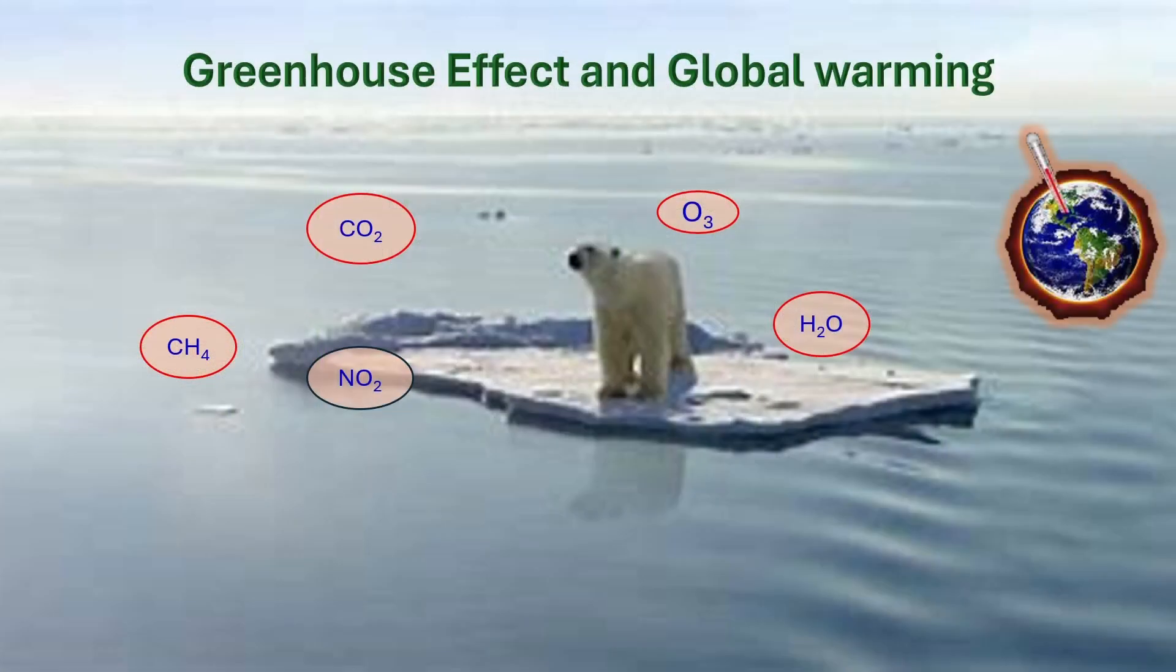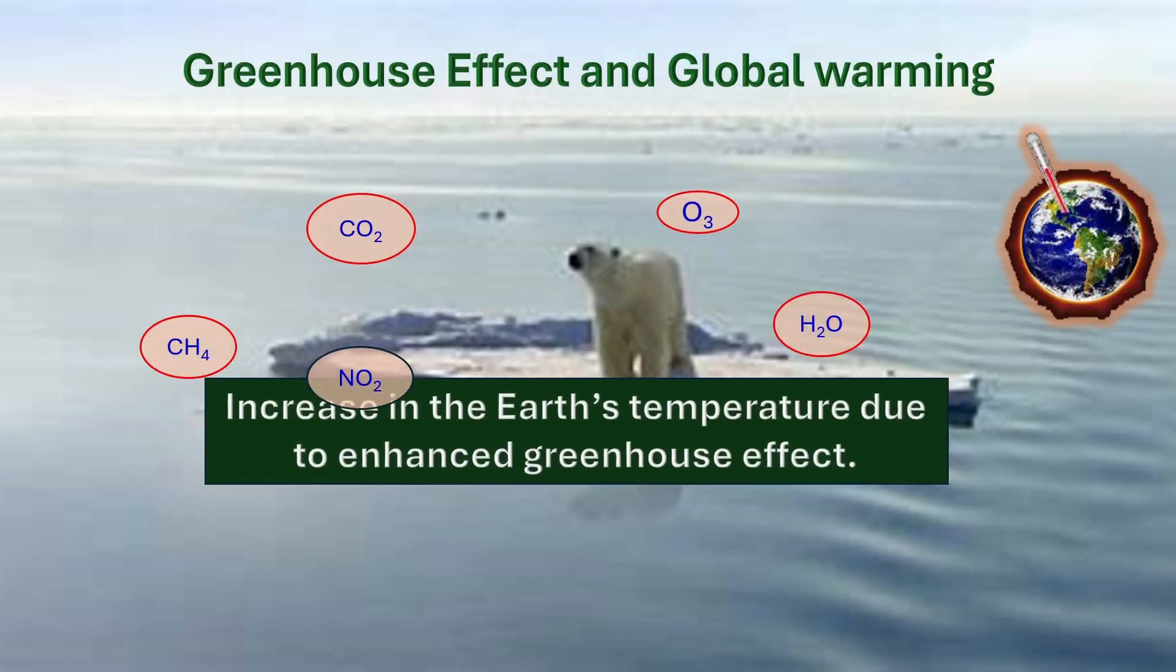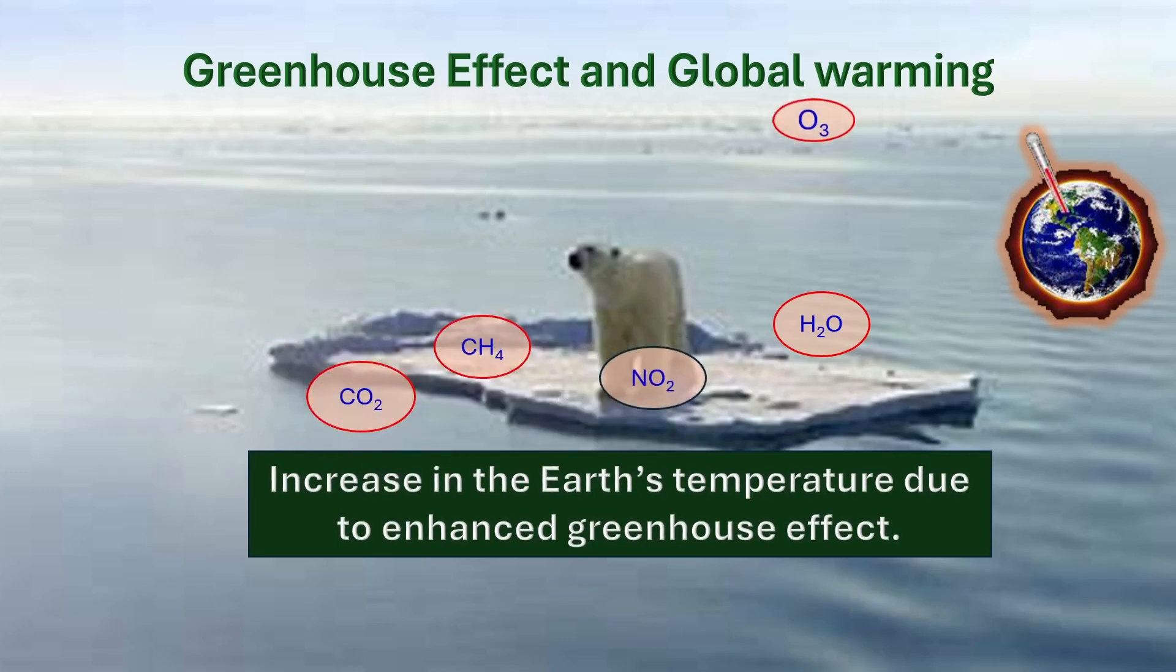Greenhouse effect is essential for life on Earth as it keeps the planet warm enough for liquid water to exist. The increase in Earth's temperature due to enhanced greenhouse effect is called global warming, which affects the climate and the environment in various ways.